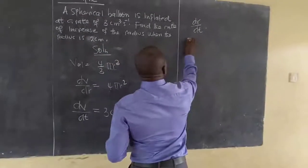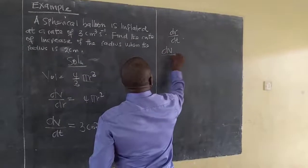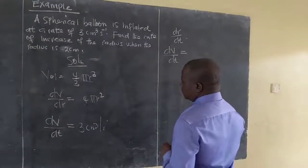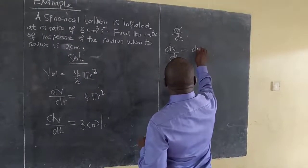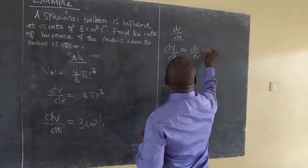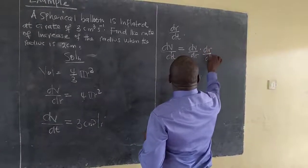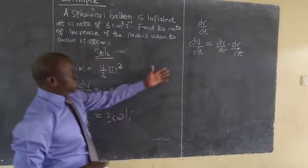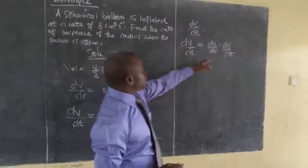So, can I use chain rule now by combining dV/dt to be equal to dV/dr times dr/dt. This combination of chain rule gives me this quantity using this variable.